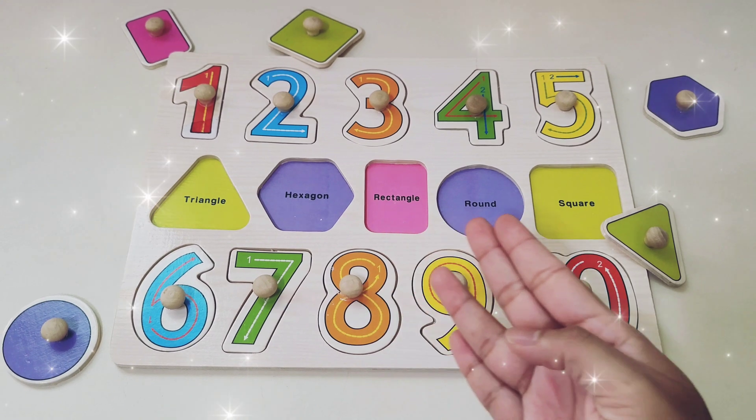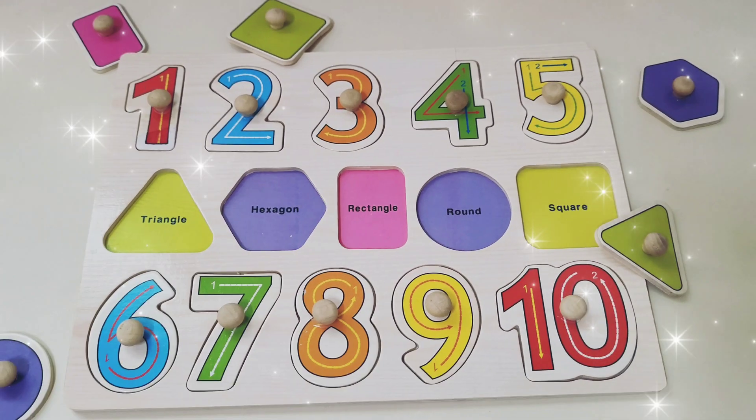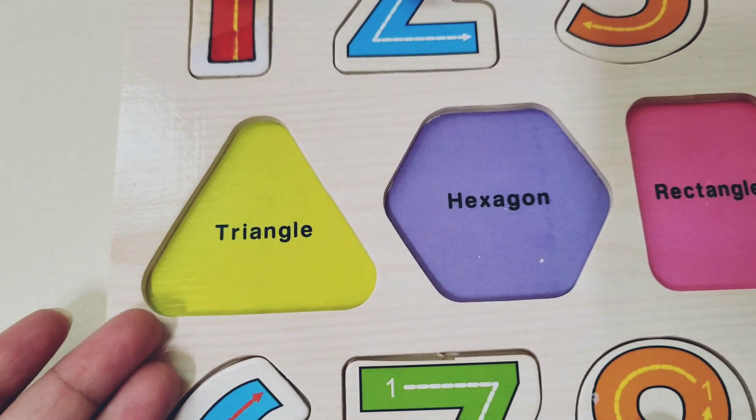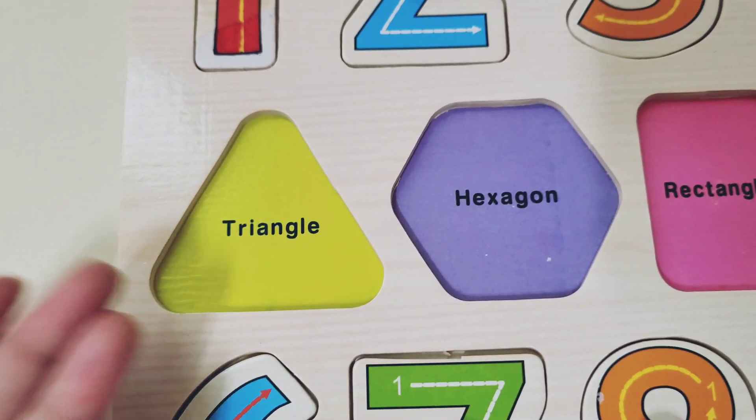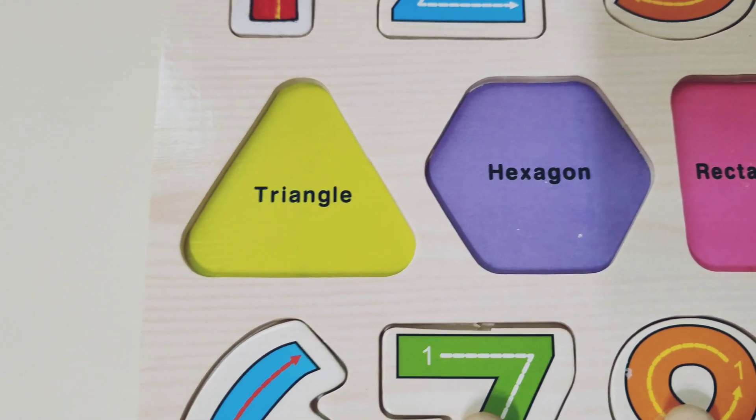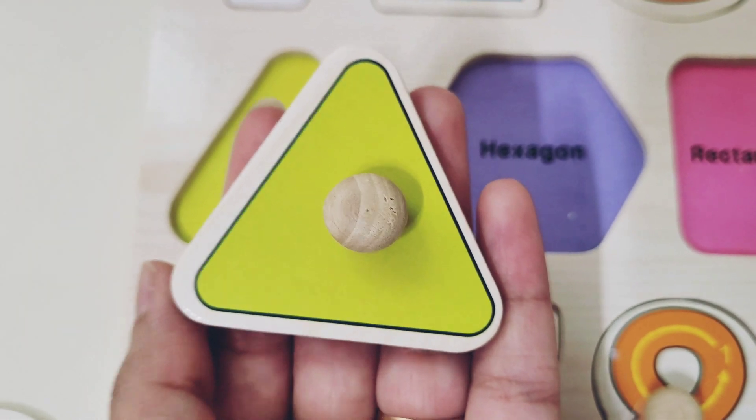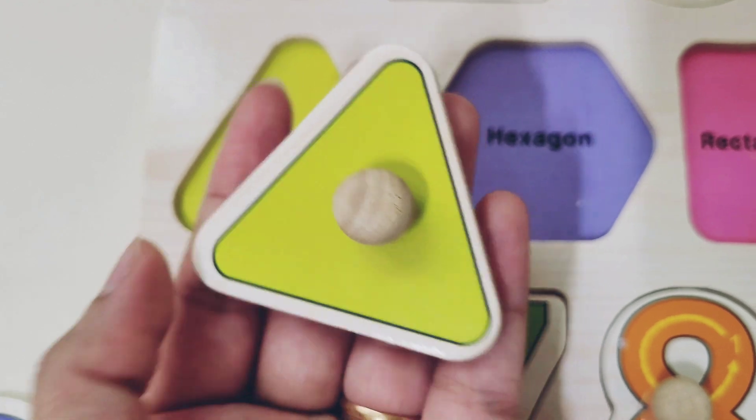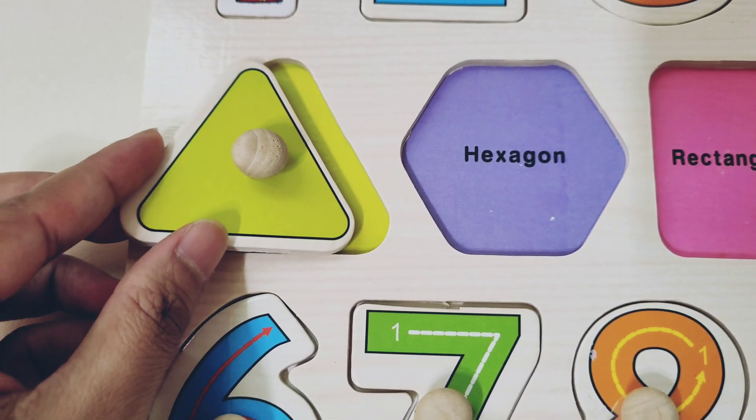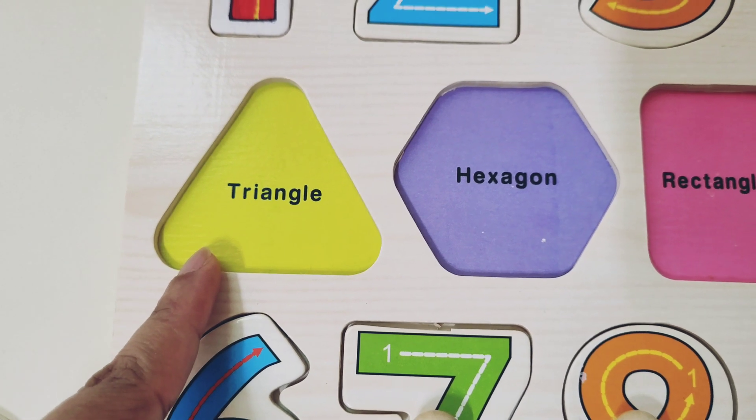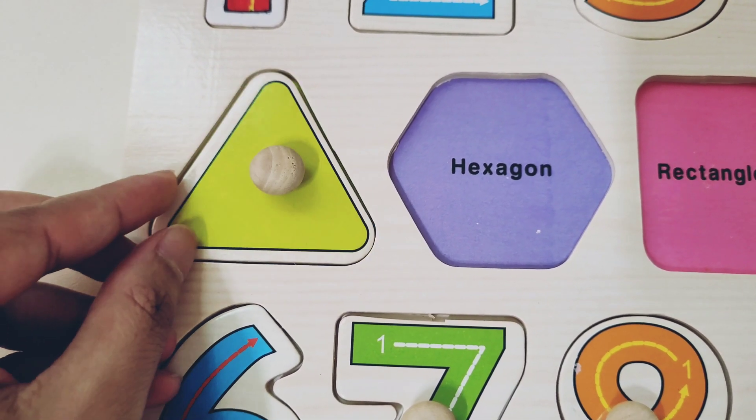Now here we only have left shapes. Let's match the correct shapes. Can you tell me which shape is this? Oh yeah! That's right! It's a triangle! Triangle! It has three corners. Let's put this triangle here. And what's the color of this triangle? Oh yeah! Yellow! Yellow triangle!